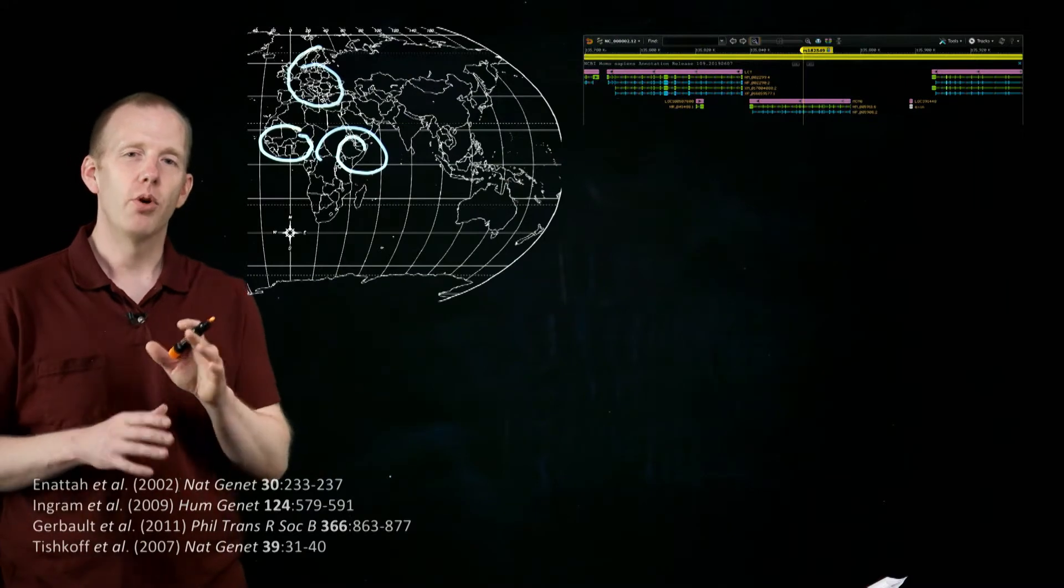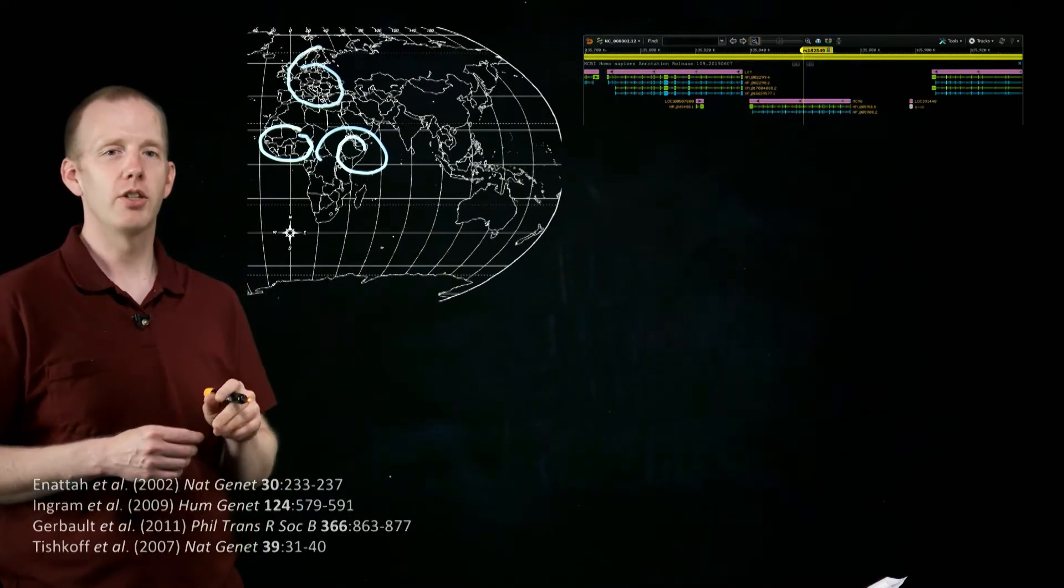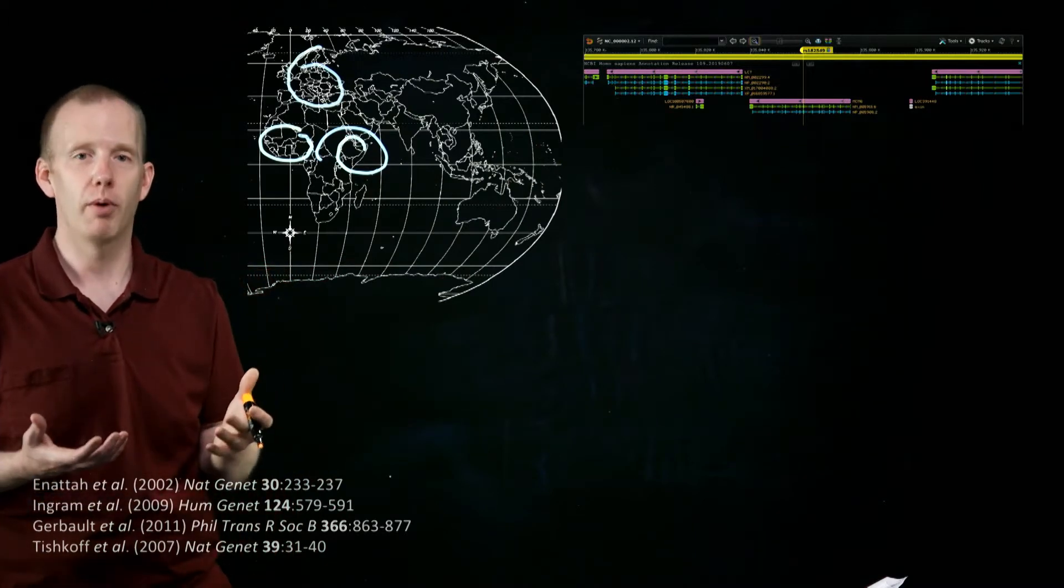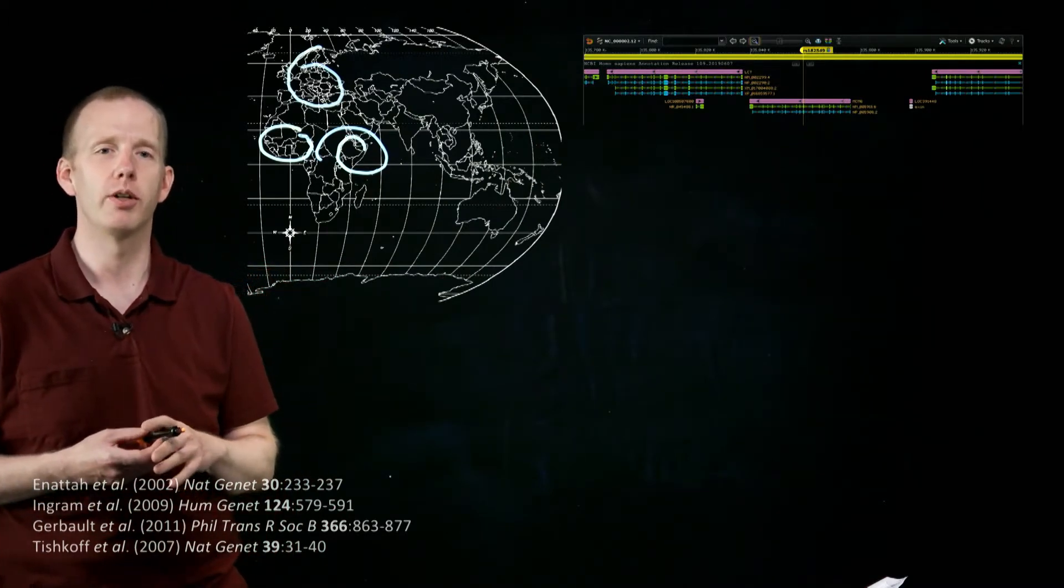And so those three groups all have mutations in or near a gene. This is a screenshot up here from the Human Genome Browser, a website you can go to to look at the human genome sequence.